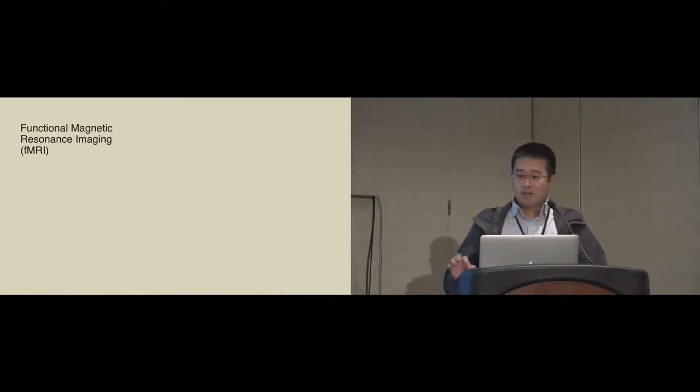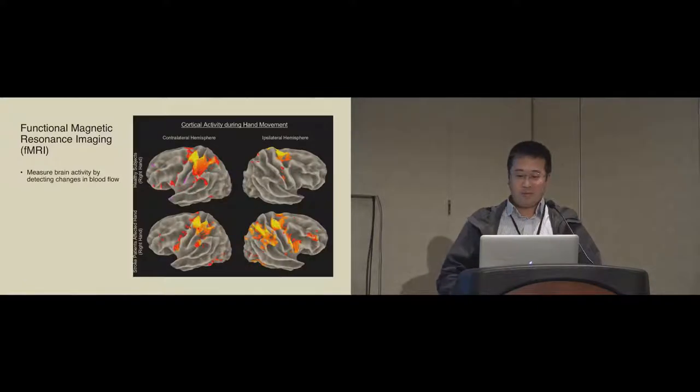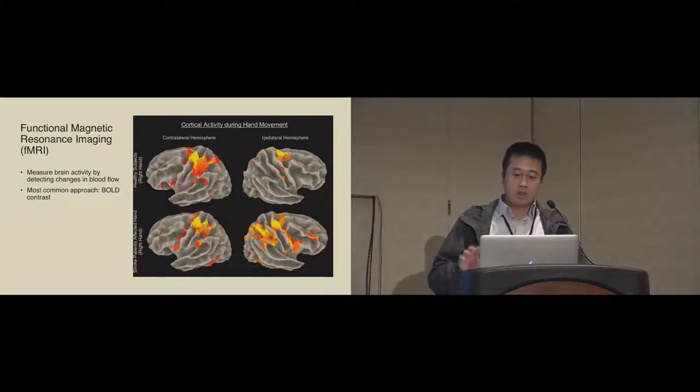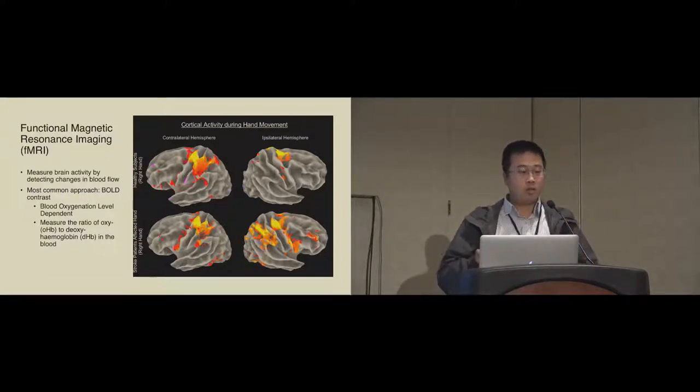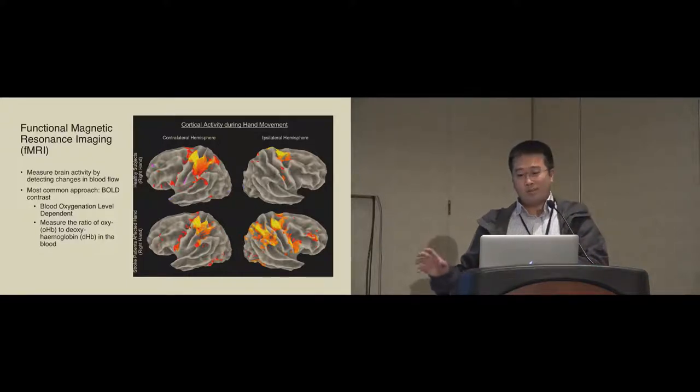Let me first explain the technique briefly. fMRI measures brain activity by detecting the change in blood flow. The most common approach in fMRI is using the BOLD contrast, which stands for blood oxygenation level dependence. BOLD measures the ratio of oxy and deoxy hemoglobin in the blood. It does not directly measure neuron activities. However, it does measure the metabolic demands of the neurons, so it can lead you to construct the structure and function of the brain.